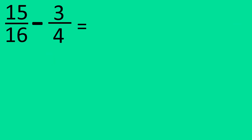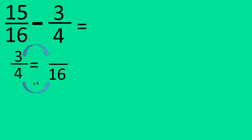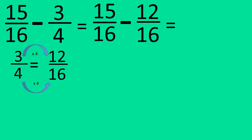Question number four: 15 over 16 minus three quarters. The denominator isn't the same, so we're going to have to change three quarters into something that has the denominator of 16. If you times four by four, then you get 16, so if you times three by four, you'll get 12. Let's write down the question again: 15 over 16 minus 12 over 16. The denominator will have to be 16, and when you take away 12 from 15, you get three.